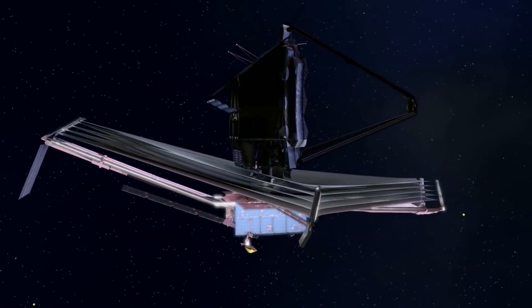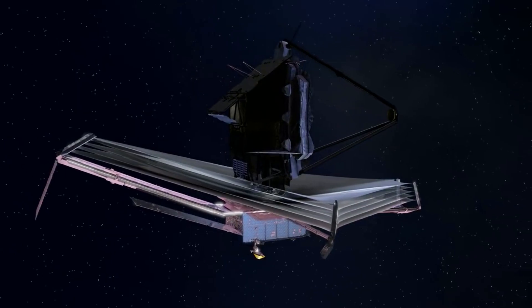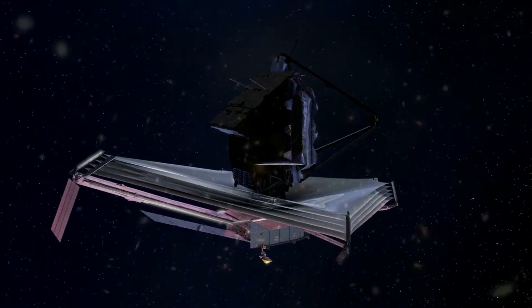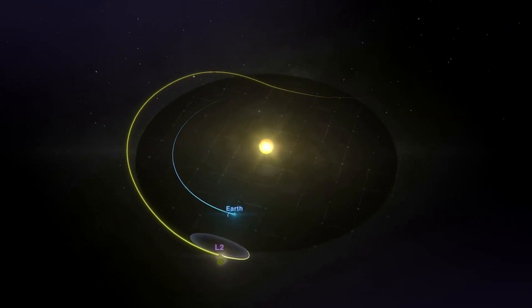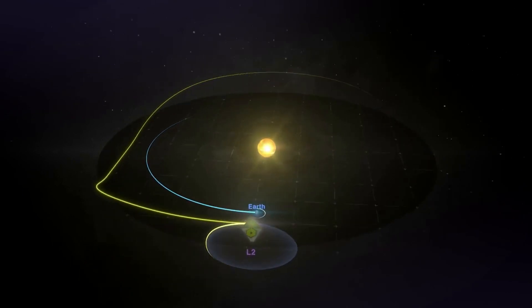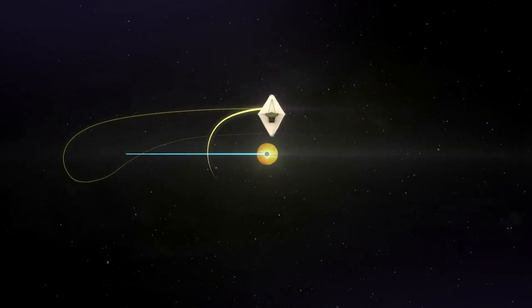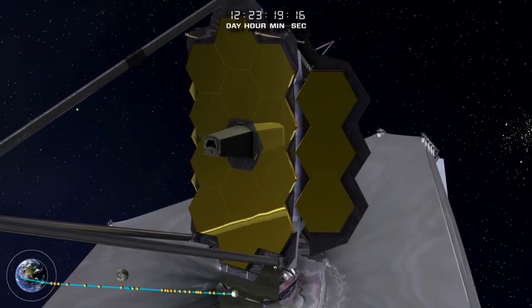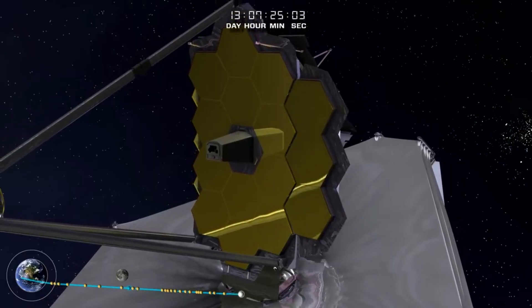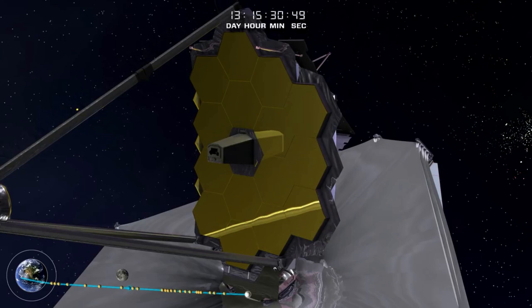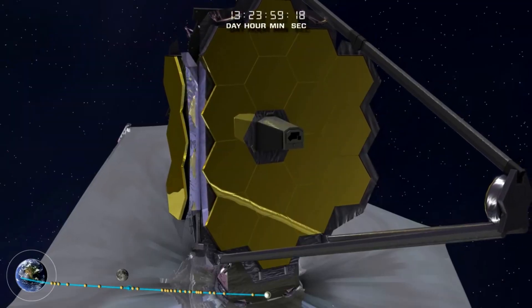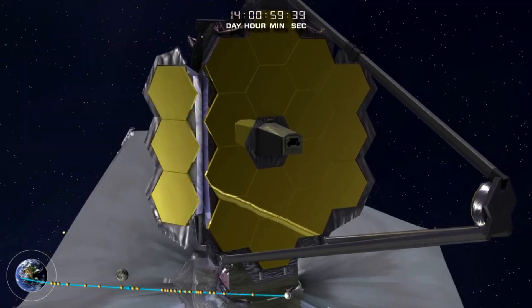Over the past few months, Webb has been working to align its primary mirror along with other vital instruments. Now in early May, NASA has recently announced the next generation telescope has completed alignment. This is a massive milestone as the JWST moves on to the next step. Here the telescope will work on its final series of preparations before scientific operations begin this summer. We will have to wait and see how it progresses and the impact it has on the space industry.